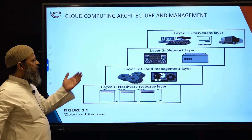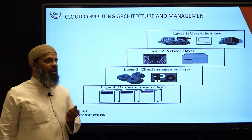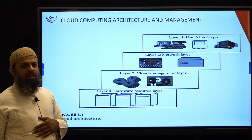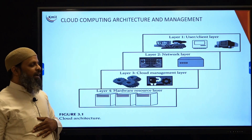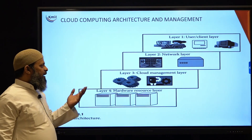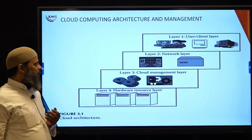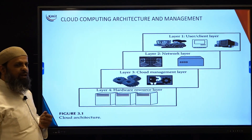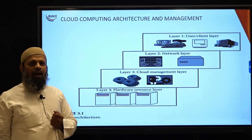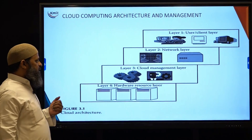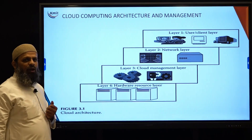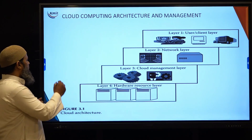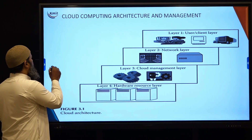The architecture includes four layers. The first layer is the user layer or the client layer, which is the lowest most layer. Next we have the network layer, then the cloud management layer, and the hardware resource layer. We will see one by one what each layer provides and how it works.